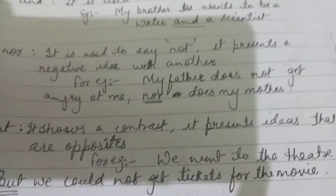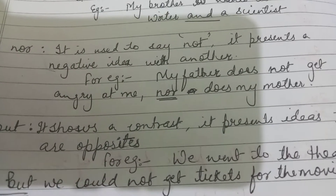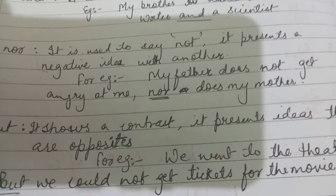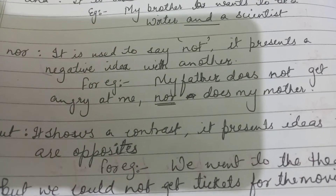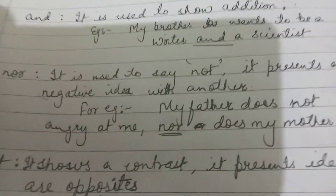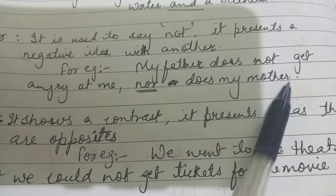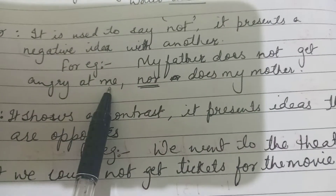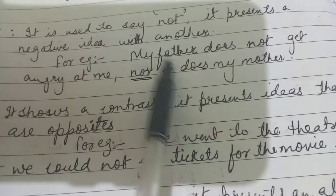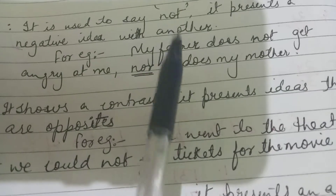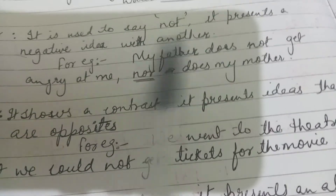The next conjunction is 'nor.' Nor is used to express a negative idea. Let us take an example: 'My father does not get angry at me, nor does my mother.' The sentence is saying that neither my father nor my mother ever gets angry at me.